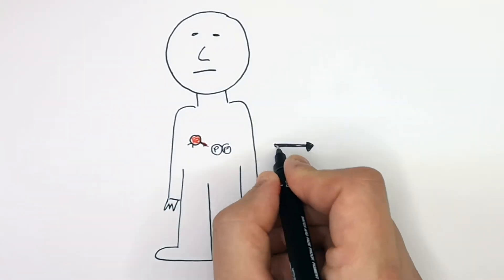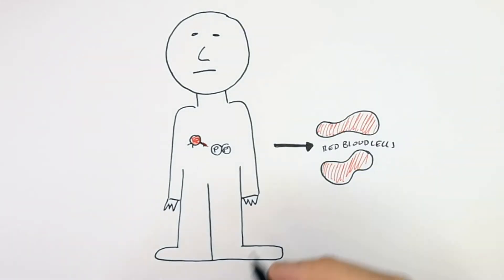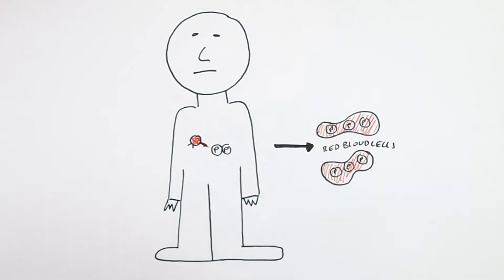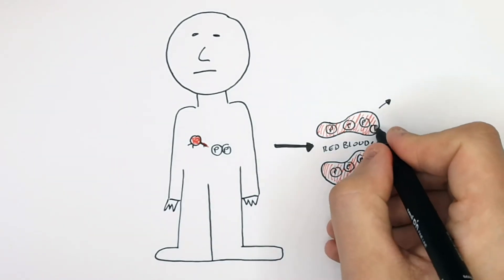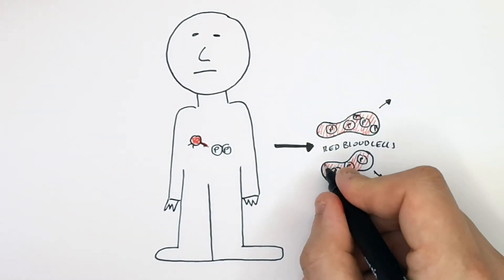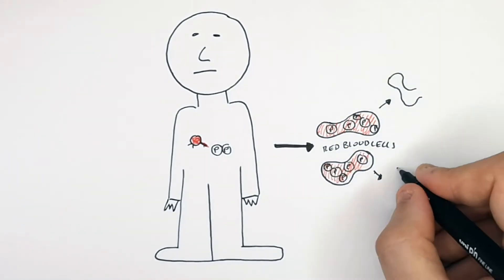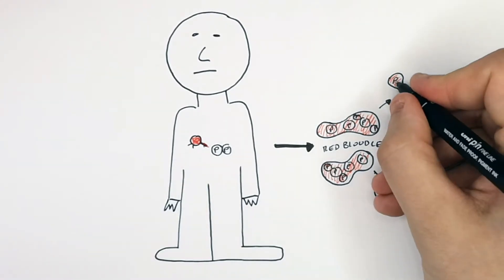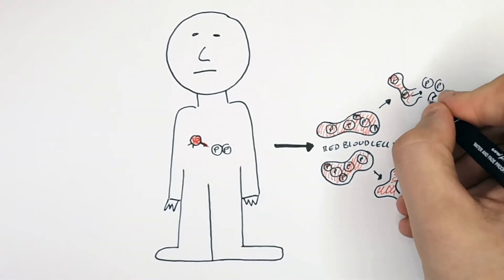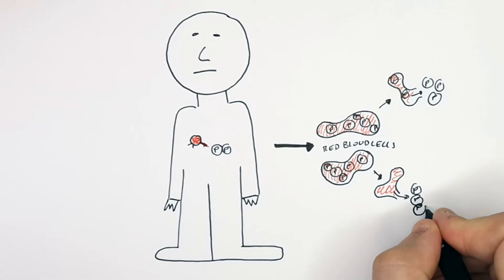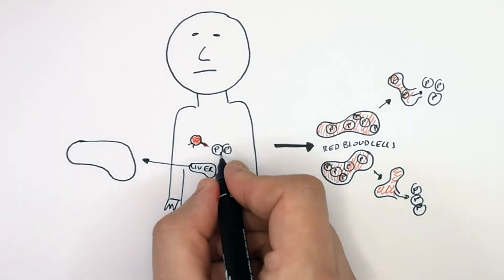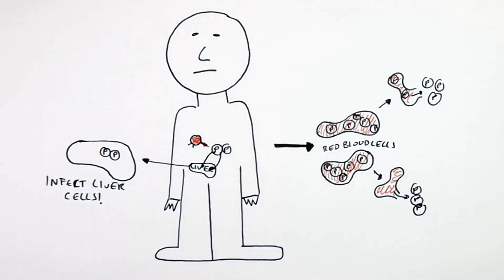The plasmodium protist is going to invade your red blood cells. Inside your red blood cells, it is going to multiply and replicate. And when there is enough plasmodium, it causes the red blood cells to burst. This then causes the plasmodium protist to spread around the body and infect other cells. The protist will also invade liver cells, causing the liver cells to lose their function.